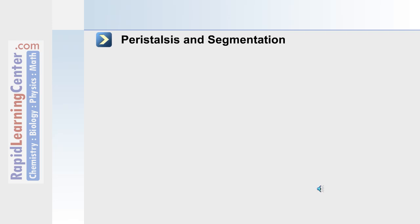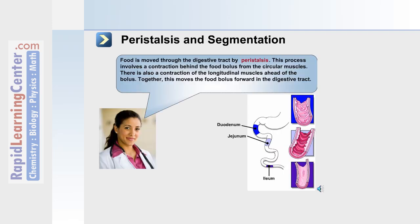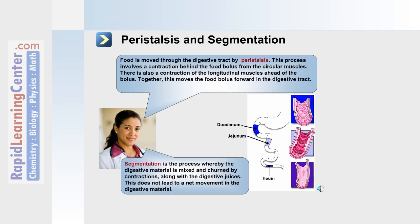Peristalsis and segmentation are two actions performed by the digestive system. Peristalsis is the movement of food through the digestive tract, involving a contraction behind the food bolus from circular muscles and a contraction of the longitudinal muscles ahead of the bolus, together moving the food. Segmentation is the process whereby digestive material is mixed and churned by contractions of the smooth muscle. This does not lead to a net movement of digestive material, but instead mixing and mechanical separation.